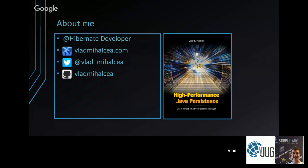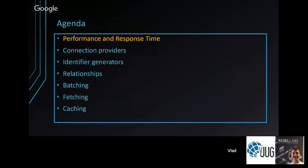You can find on my blog vladmihalca.com an extensive list of articles about Hibernate and JPA, but also things like NoSQL, NewSQL, and transactions/ACID. This presentation is very much based on the second part of my book, High Performance Java Persistence, which covers not only Hibernate but also JDBC and jOOQ. Today's agenda: we'll discuss what performance is, how we measure it, and go through all the topics that affect performance.